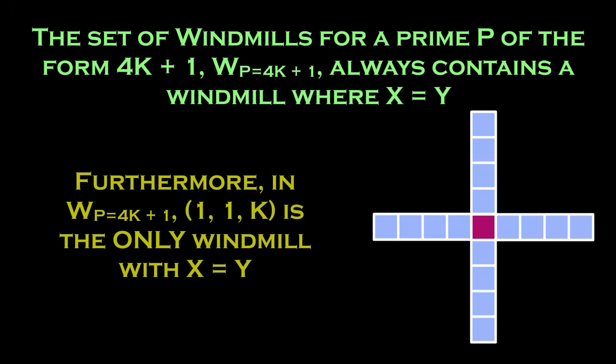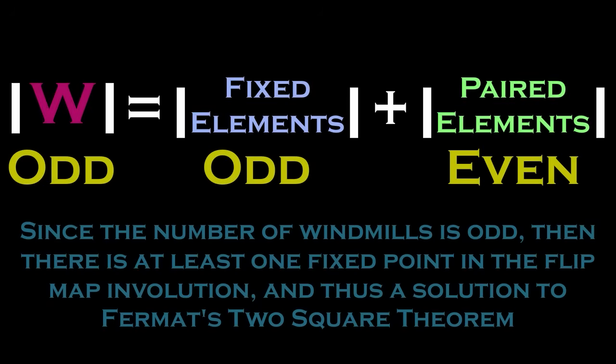But here's the key idea. Remember that in the windmill section, I said that for a prime of the form 4k plus 1, the only windmill that has x equal y is of the form 11k. Thus, since there is only one fixed point, the number of windmills is odd, and thus the flip map also has to have a fixed point, thus completing the proof.